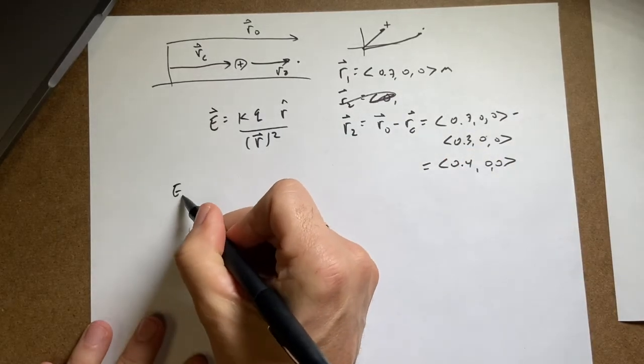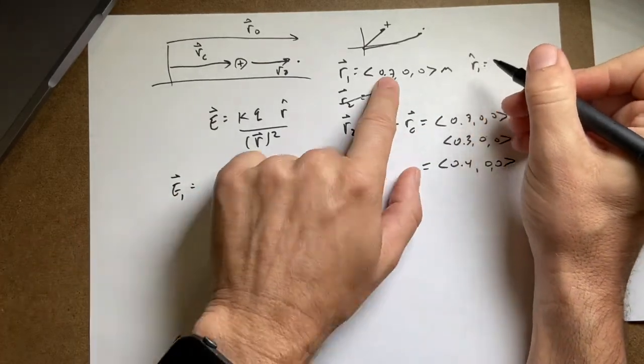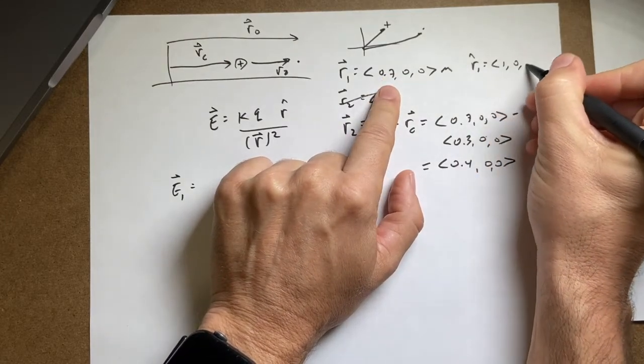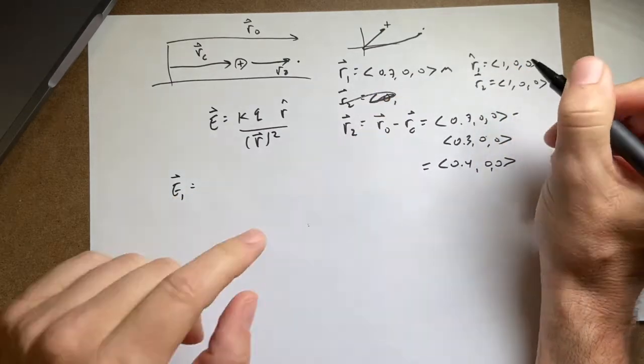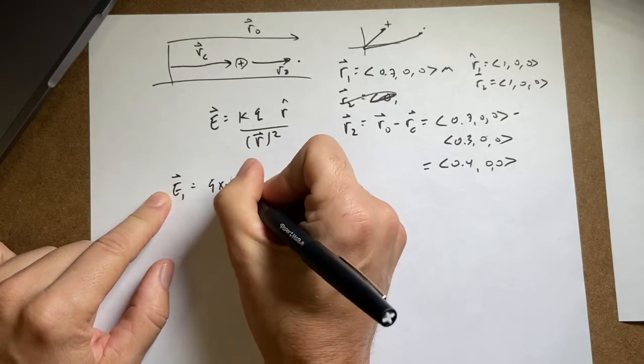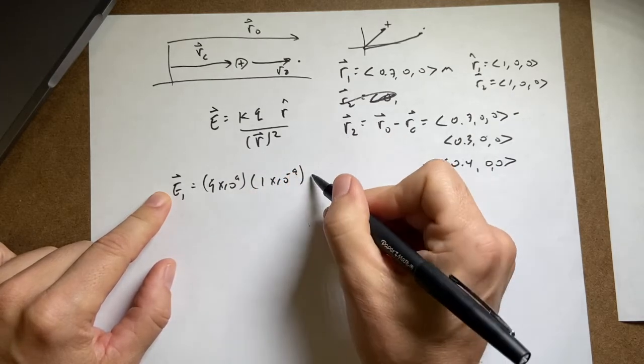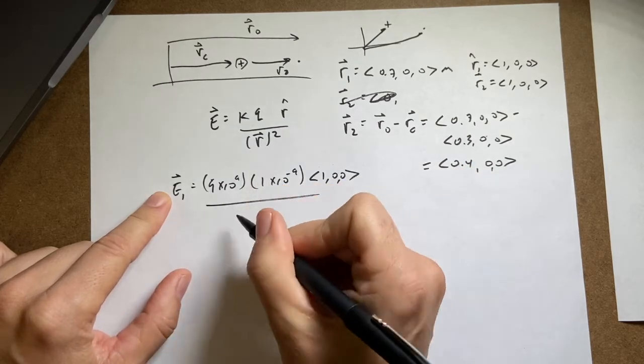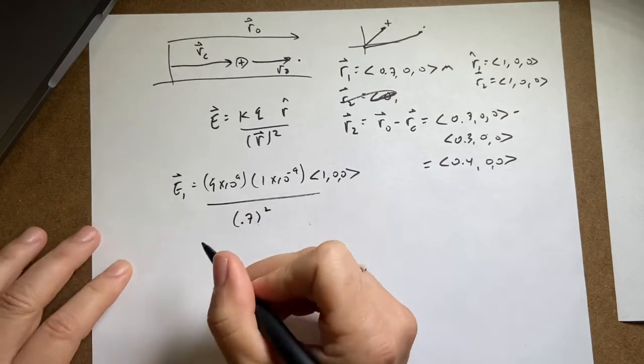Now I can say E1 vector. I need to find R hat. R1 hat is just going to be the magnitude of this is 0.7 divided by this. So it's going to be 1, 0, 0. R2 hat is also 1, 0, 0. Okay. So E1 is going to be 9 times 10 to the 9th times 1 times 10 to the negative 9th times the vector 1, 0, 0 divided by the magnitude of this squared, which is going to be 0.7.